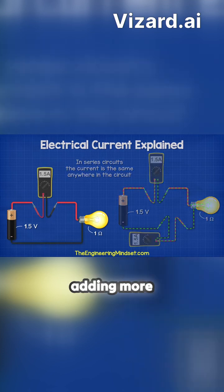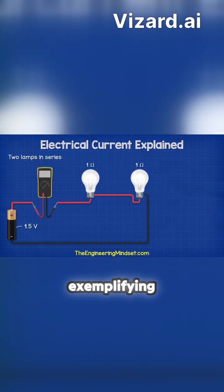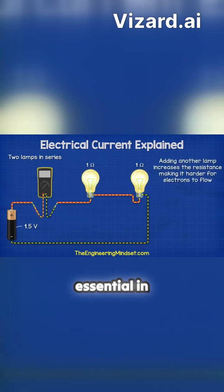In a series circuit, adding more lamps increases resistance and reduces current, exemplifying Ohm's law in action. This principle is essential in effective circuit design.